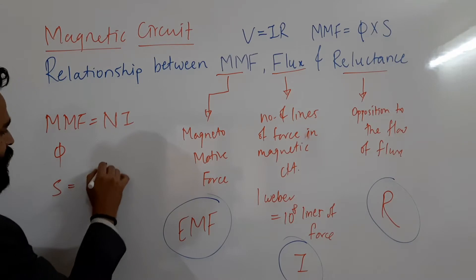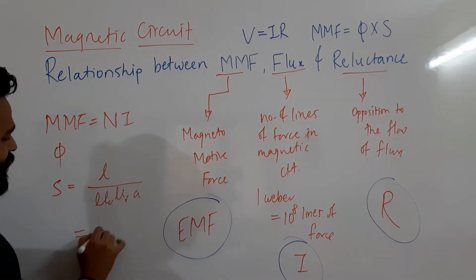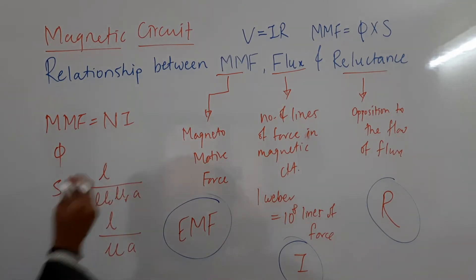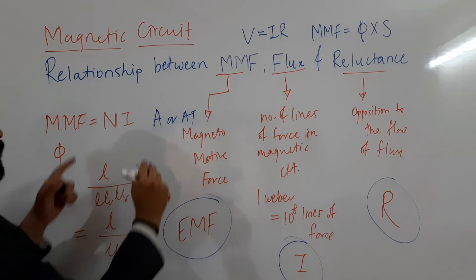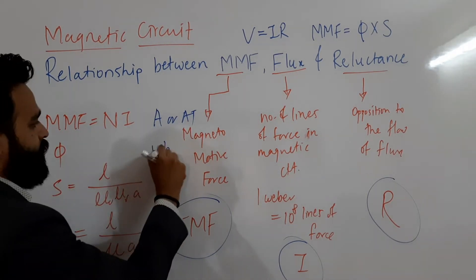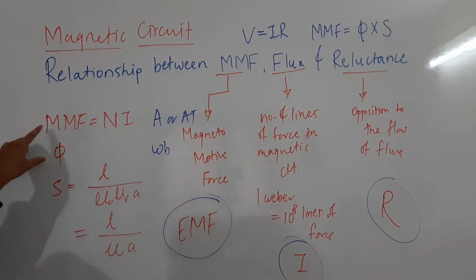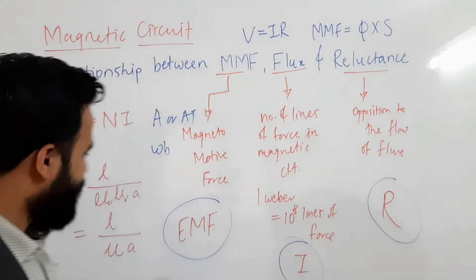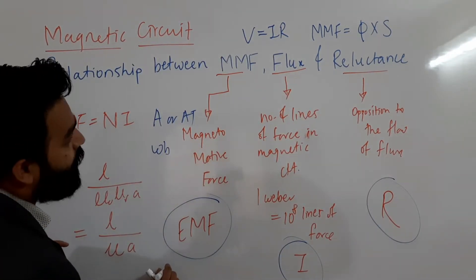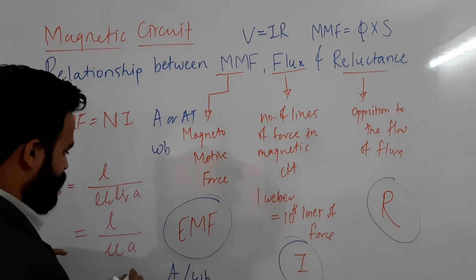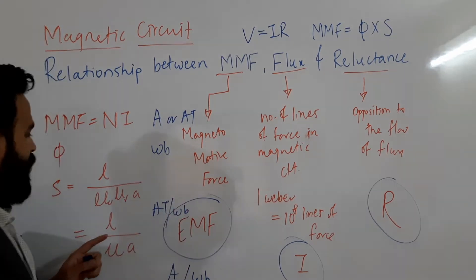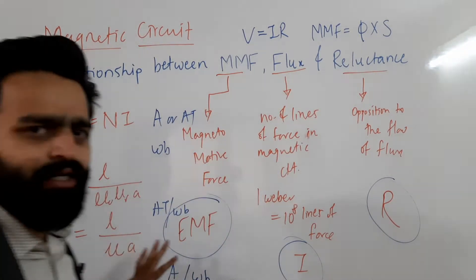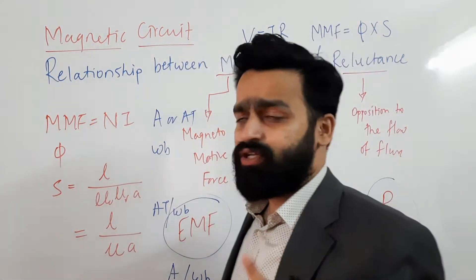The equation for reluctance is S = L / (μ₀ μᵣ A), or simply L / (μA), because μ₀μᵣ = μ. The unit of MMF is ampere or ampere-turn. The unit of flux is Weber. And the unit of reluctance — using MMF divided by flux — is ampere-turn per Weber. With this background understood, we can now proceed to derive the relationship between MMF, flux, and reluctance.